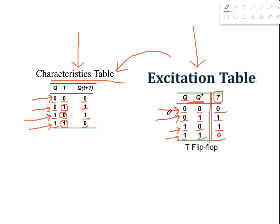This is how we can build the excitation table of the T flip-flop using the characteristic table. That's it for the T flip-flop and for all the flip-flops and all their tables. Thank you everyone, thanks for watching.